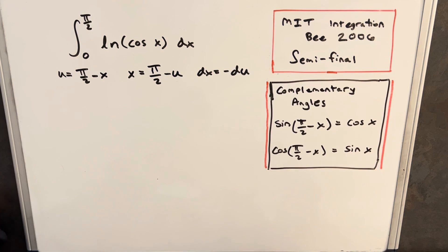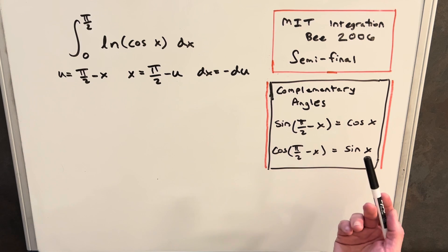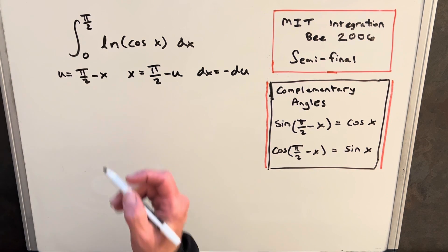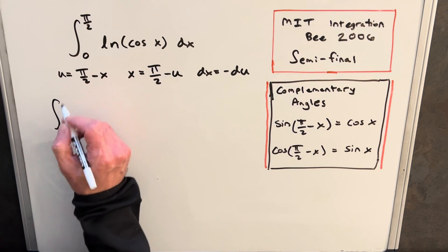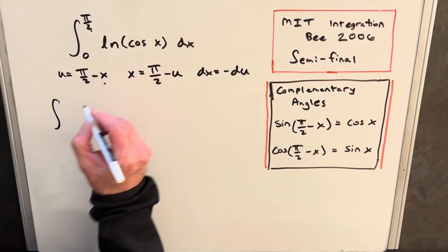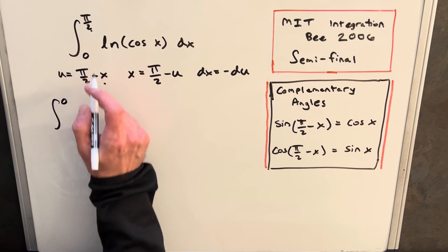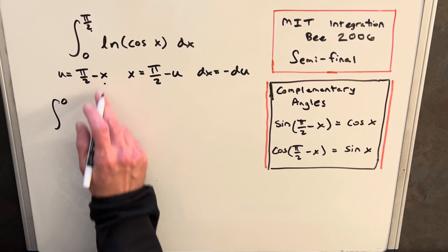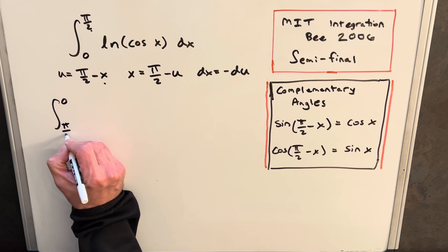This is going to allow us to make use of the complementary angle formulas that we have over here on the right. Basically the idea is it just flips from sine to cosine or cosine to sine. So let's make our substitution, but first we'll fix our bounds of integration. When we plug pi over 2 in for x, we're going to have 0. When we plug 0 in for x, we're going to have pi over 2.